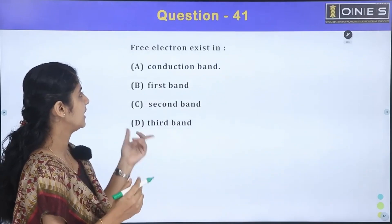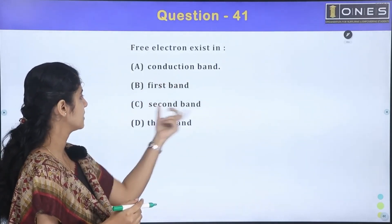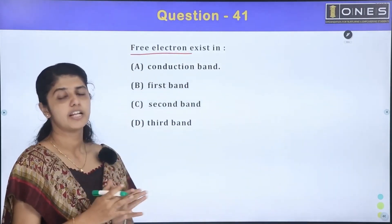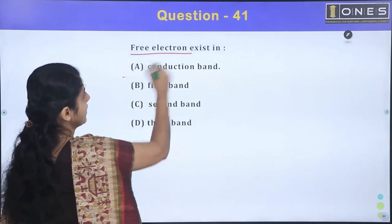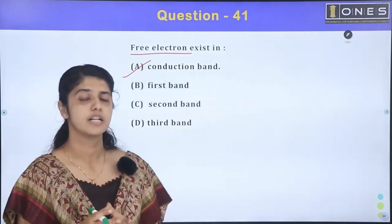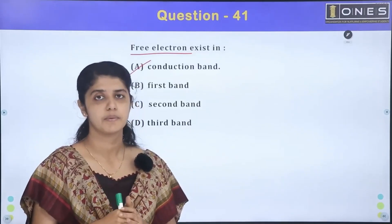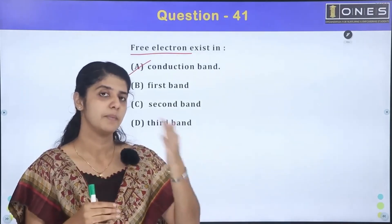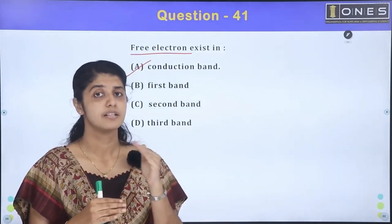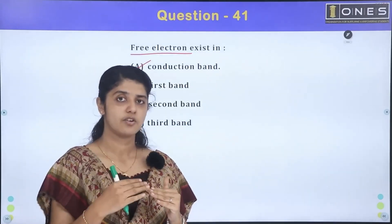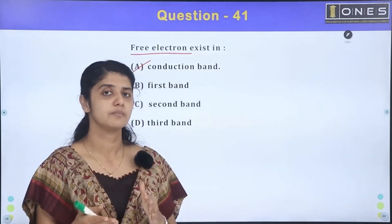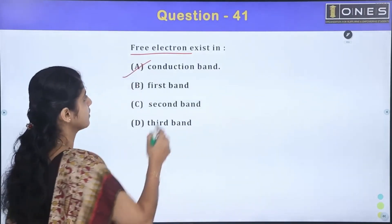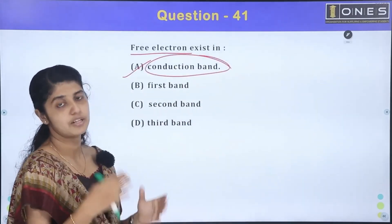Free electron exists in conduction band, first band, second band, third band. What is the answer? Free electron. Where is the free electron? Conduction band. We use crystal, we use energy bands, energy levels. We use the outermost shell, valence shell, valence band electrons. Then electrons are free. The answer is conduction band - free electrons exist in conduction band.